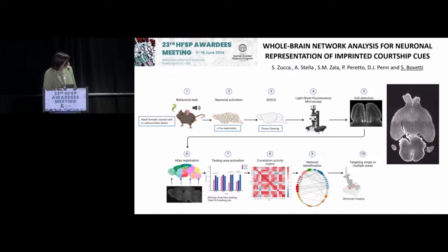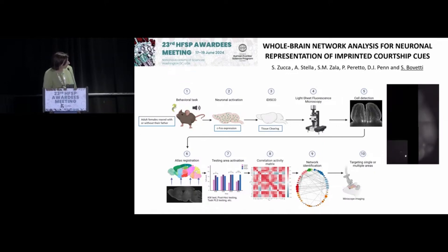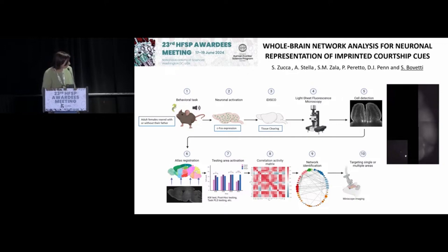The brains are withdrawn, labeled for the immediate early gene c-Fos, made transparent by tissue clearing, and then we acquire the whole brain c-Fos signal using light-sheet fluorescence microscopy. Images are then aligned with the Allen Brain Atlas, and in this way we know exactly how many cells are recruited in each brain region. Using mathematical analysis with correlation metrics, we can dissect exactly which brain circuits are recruited.